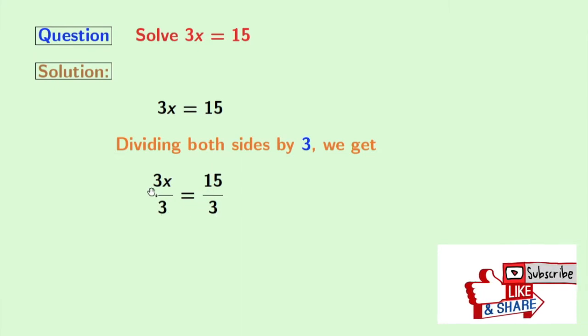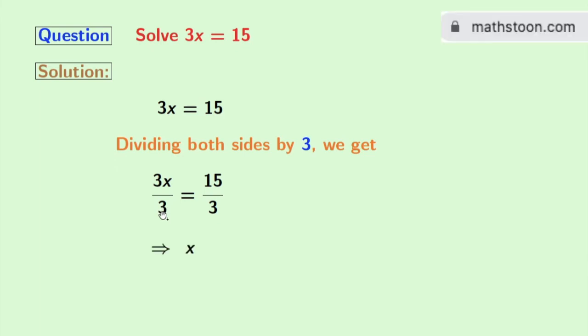Now look at the left hand side. 3 gets cancelled and we are left with x. And on the right hand side, we have 15 divided by 3, which is 5. So finally, we get x equals 5 as our answer.